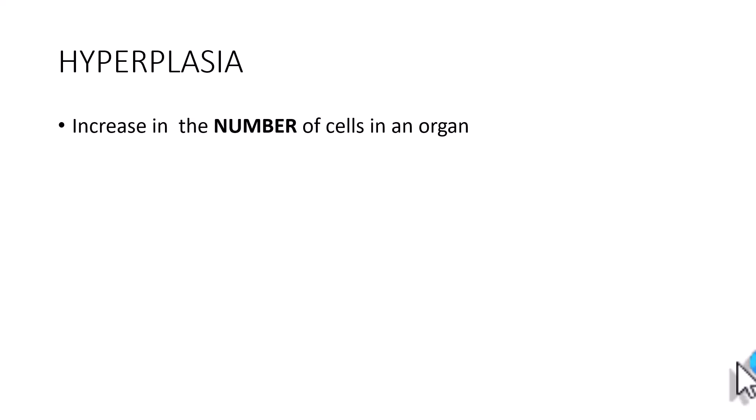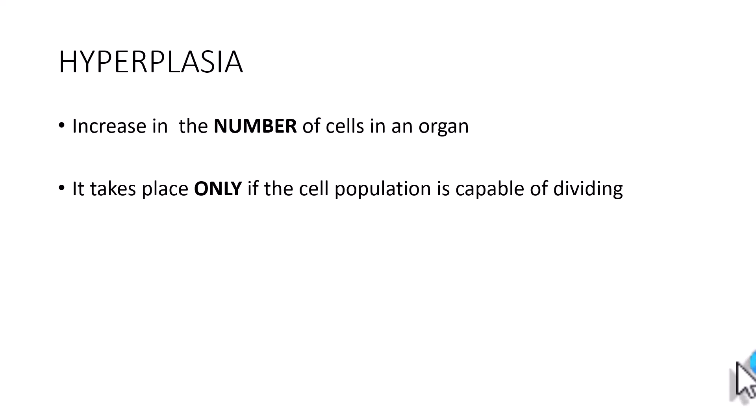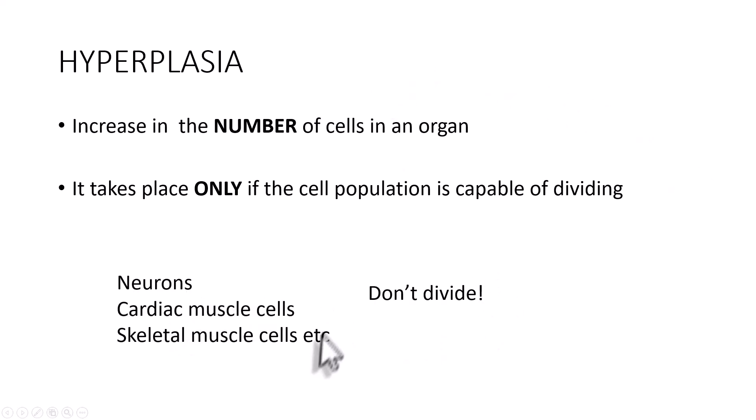Hyperplasia by definition is increase in the number of cells in a given organ. In my earlier session, I talked about hypertrophy, which is increase in the size of the cell in the given organ. Whereas here, it is increase in the number of cells. Remember, hyperplasia can occur only if the cell population is capable of dividing. Non-dividing cells cannot show hyperplasia — for example, neurons, cardiac muscle cells, and skeletal muscle cells do not divide, and that is why they only show hypertrophy and not hyperplasia.